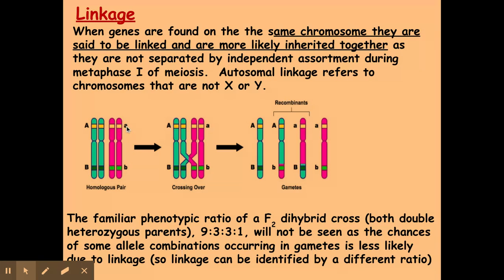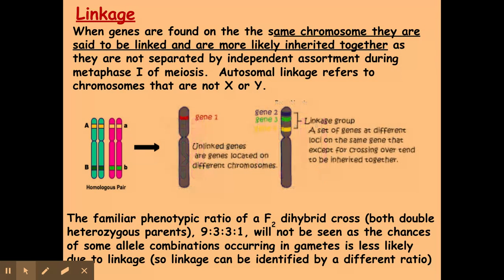This means that during crossing over, which occurs in meiosis to produce the gametes, I'm more likely to get different combinations of A and B on my chromosomes. Whereas if I have genes that are more closely linked — for example genes 2 and 3 here, which are very close together on the chromosome — they're less likely to be separated during crossing over in meiosis.